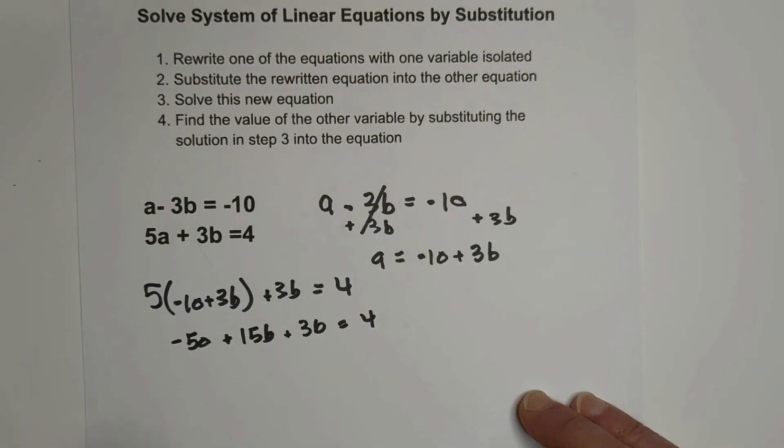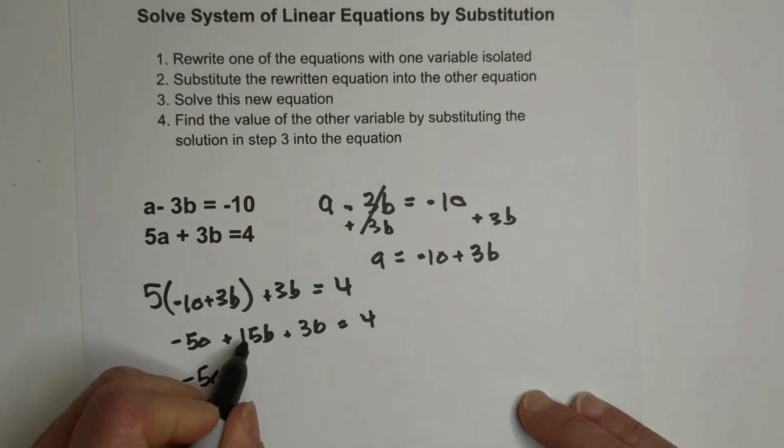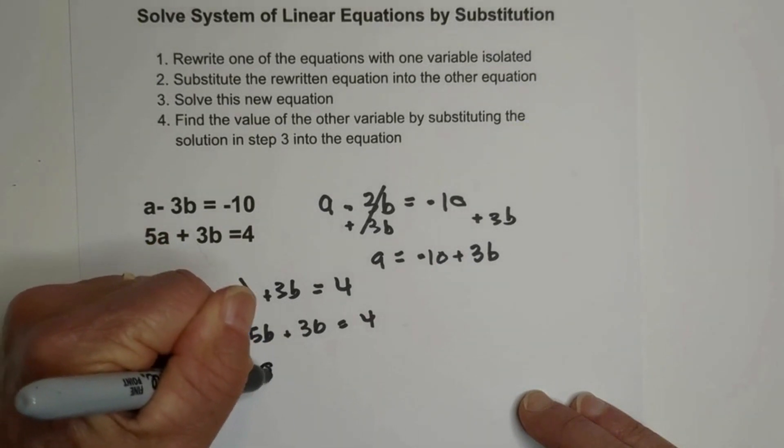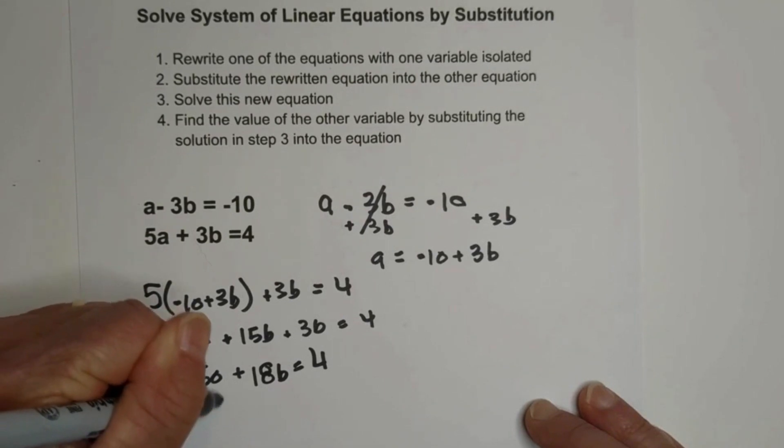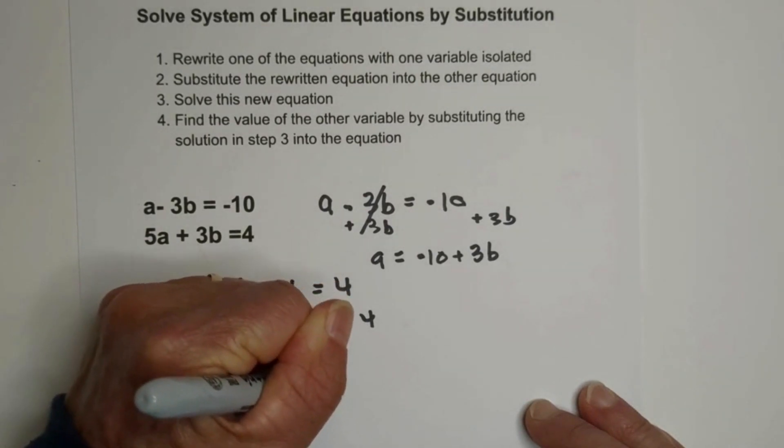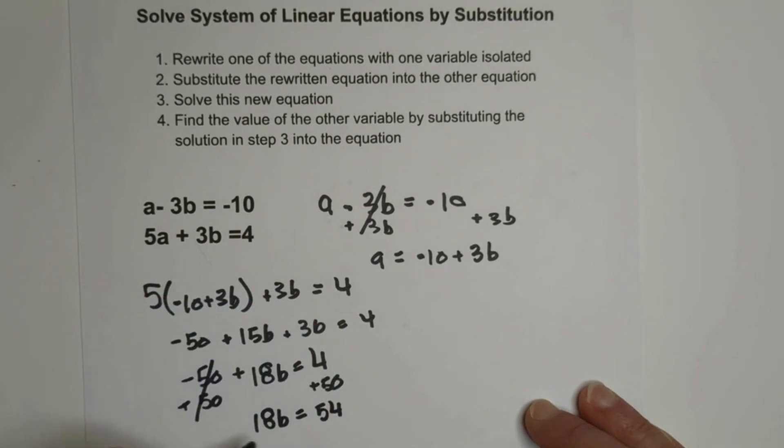So now we're going to solve this. So this would be step three here. Let's combine like terms first. Negative 50 plus 15 plus 3 is 18B equals 4. And so now let's get rid of the 50 by an inverse operation of adding 50.